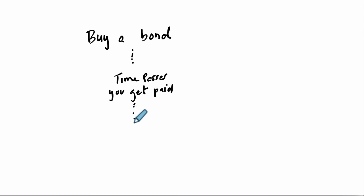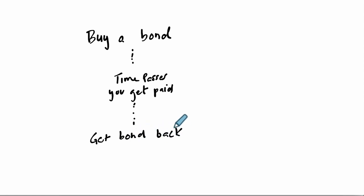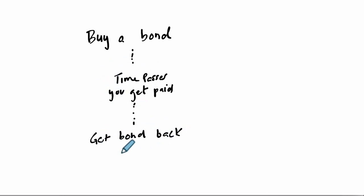Then at the end of its life, you get the bond back. For example, if you buy a $10,000 bond and you get 6% return each year, you're going to get $600 per year for 10 years, and then at the end of those 10 years, you get that bond back. That's how most of them work.